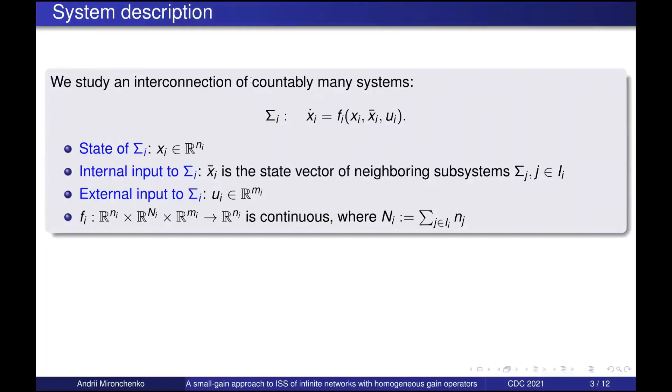So we consider an interconnection of countably many systems. Each of them is an ordinary differential equation. Xi is the state of sigma i. Xi bar is the internal input, which consists of states of neighboring subsystems. And Ui is an external input to sigma i. We assume that Fi is continuous and that this system is well posed.